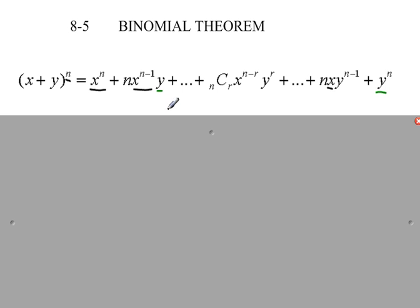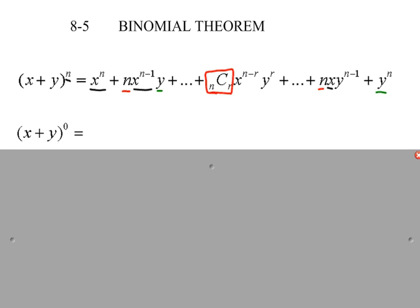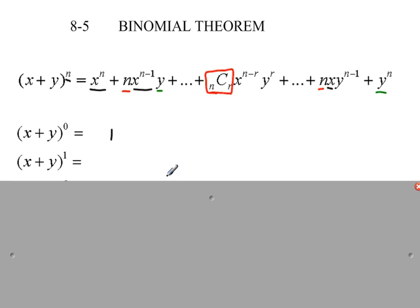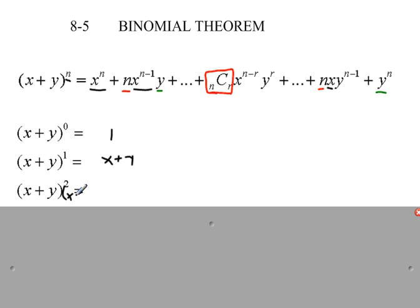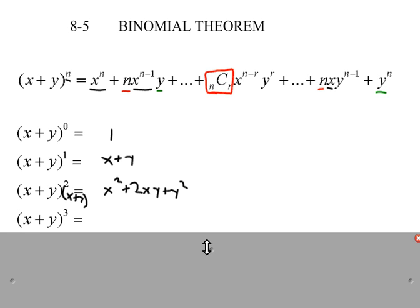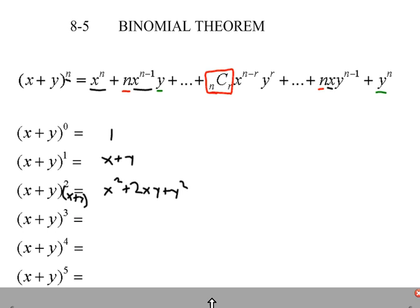Another thing you might notice is this number in front — we see this 'C'. What's that all about? The number in front is going to be what's called a combination, and we'll need to talk about what that means. But looking at just a few examples: x plus y to the 0 is 1, x plus y to the first equals itself, and x plus y squared gives us x squared plus 2xy plus y squared using the distributive property. Things get progressively more difficult from here.